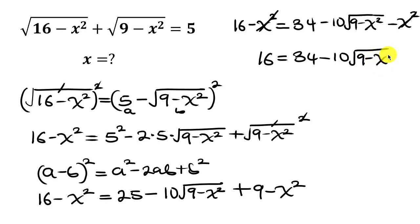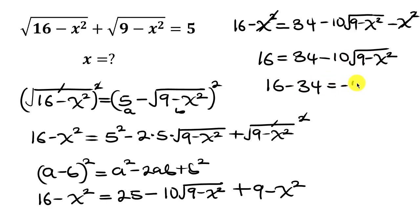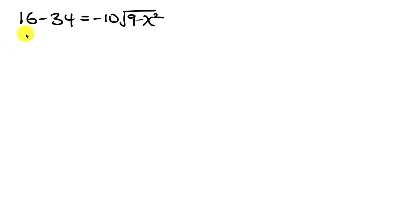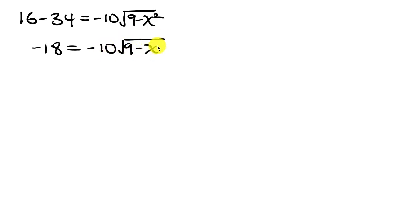Now let's move 34 to the left hand side. As 34 crosses it becomes minus 34, so we have 16 minus 34 equal to negative 10 times the square root of (9 minus x squared). And 16 minus 34 is negative 18, giving us negative 18 equal to negative 10 times the square root of (9 minus x squared).